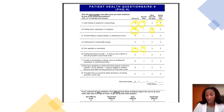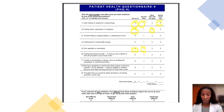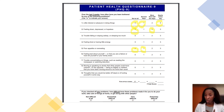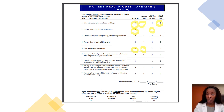The ninth question, because there are nine questions on the PHQ-9 questionnaire, asks about thoughts that you would be better off dead or of hurting yourself in some way. This could be suicidal thoughts, or just thoughts of being better off not being here. It also includes homicidal thoughts about hurting other people. The responses range from not at all to nearly every day over the last two weeks.